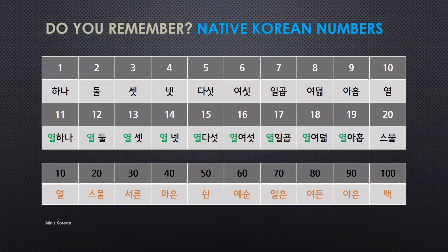Do you remember Native Korean numbers and Sino-Korean numbers? When you say time, you have to know both. So Native Korean numbers first, from one: 하나, 둘, 셋, 넷, 다섯, 여섯, 일곱, 여덟, 아홉, 열.